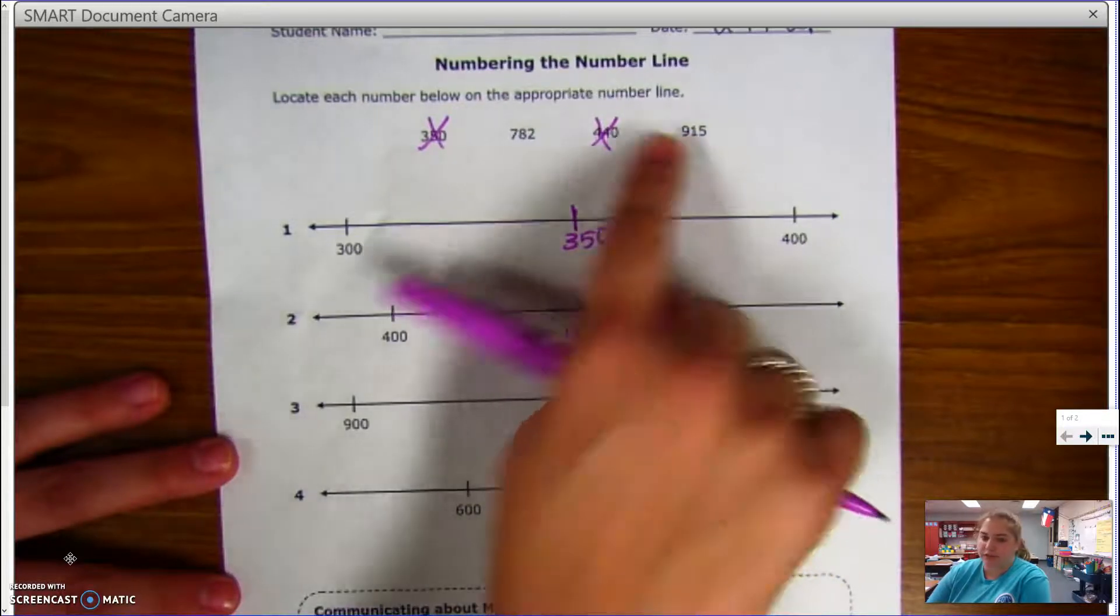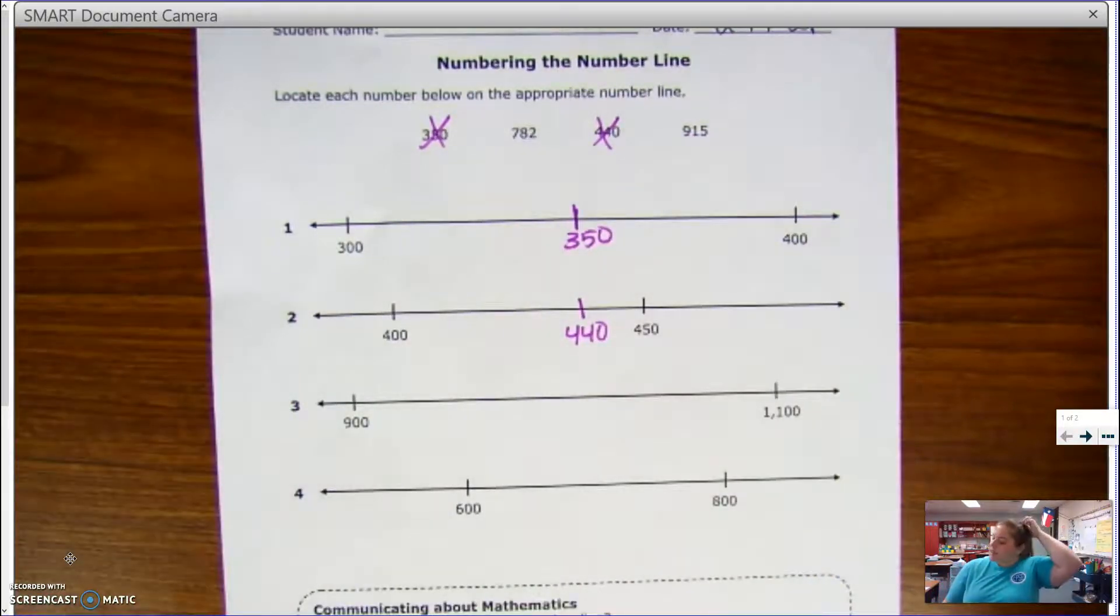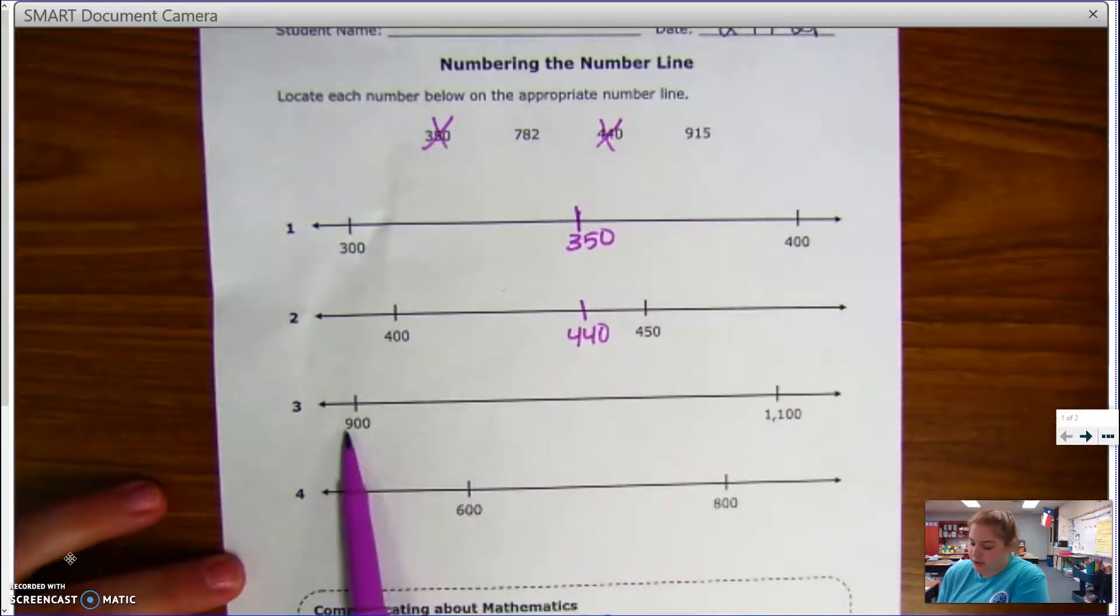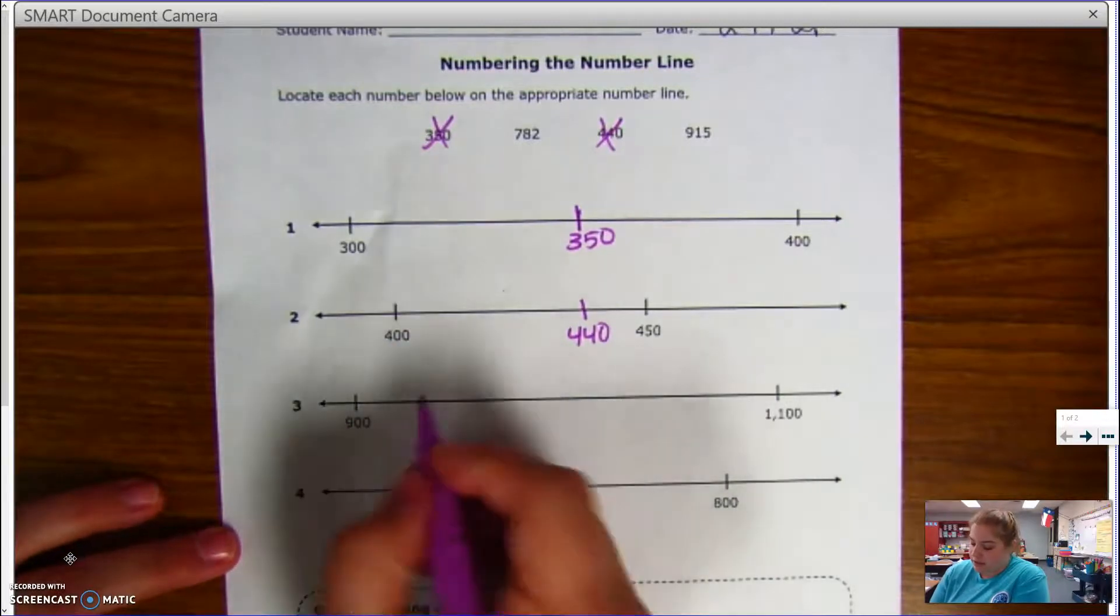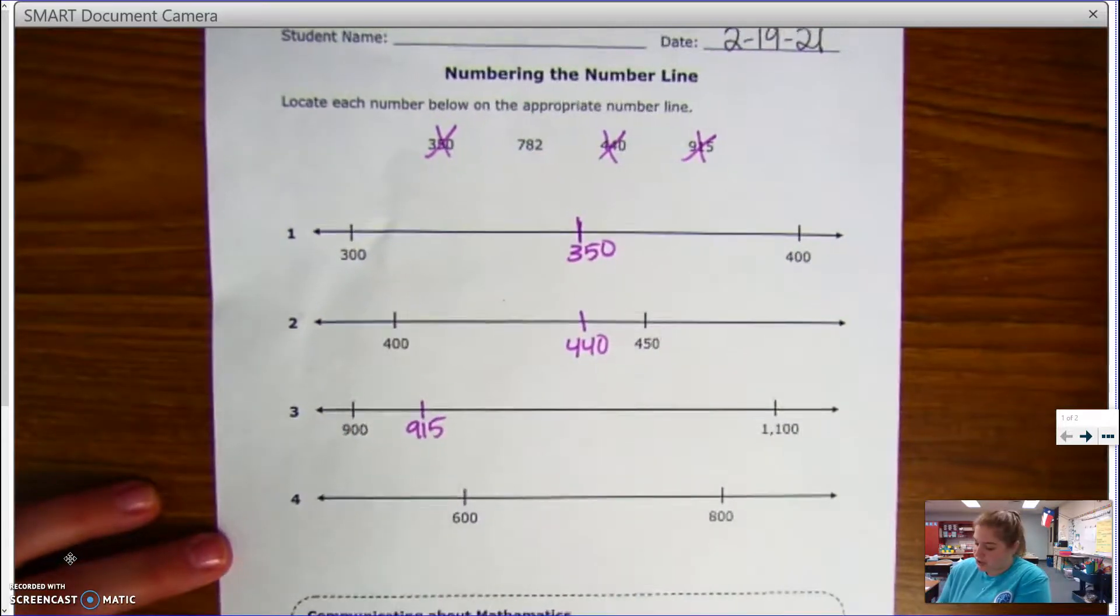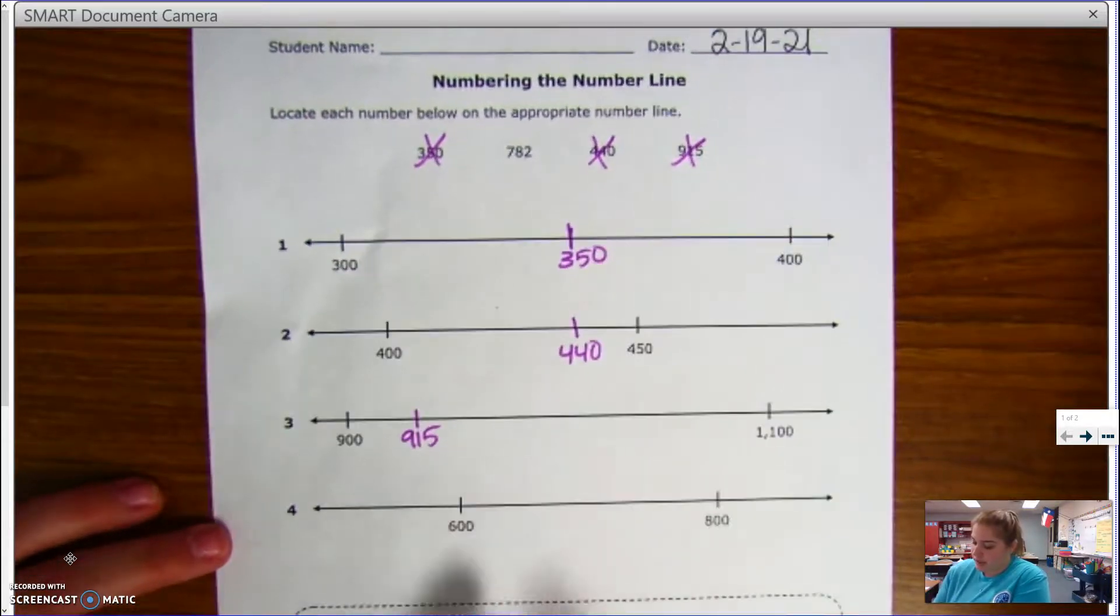I know 915 is going to be much closer to 900 than it would 1100, so I'm going to put it about here. And then my last number 782, it goes between 600 and 800.